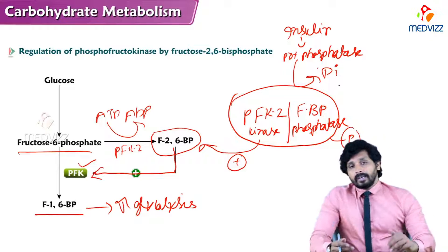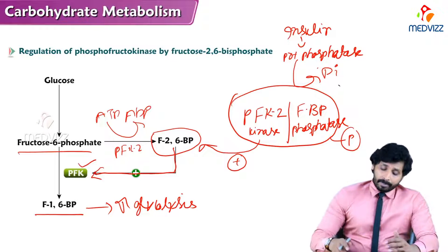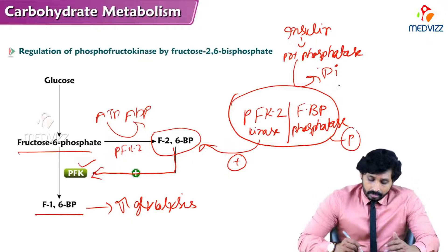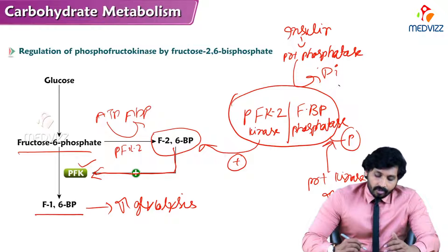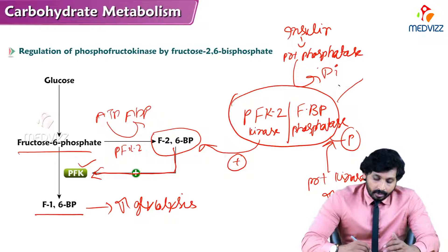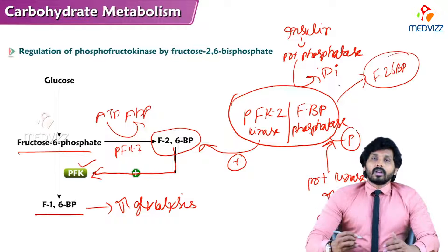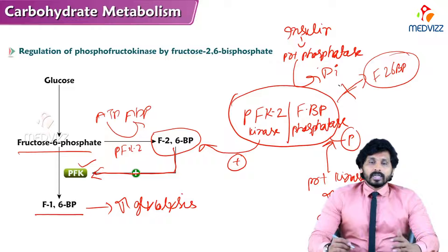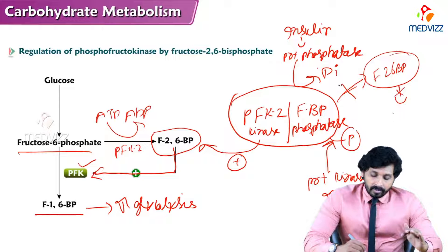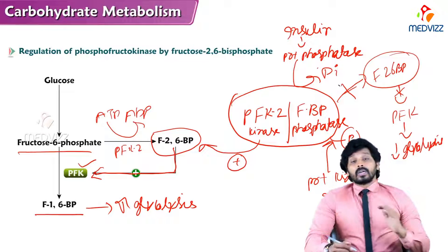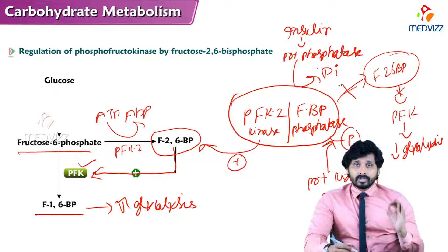In starvation, glucagon comes into action when there is no glucose. Glucagon activates protein kinase A, which adds phosphate groups to the bifunctional enzyme, inhibiting the formation of fructose-2,6-bisphosphate. This indirectly inhibits PFK1, leading to a decrease in glycolysis, since glucose is absolutely required for glycolysis to proceed.